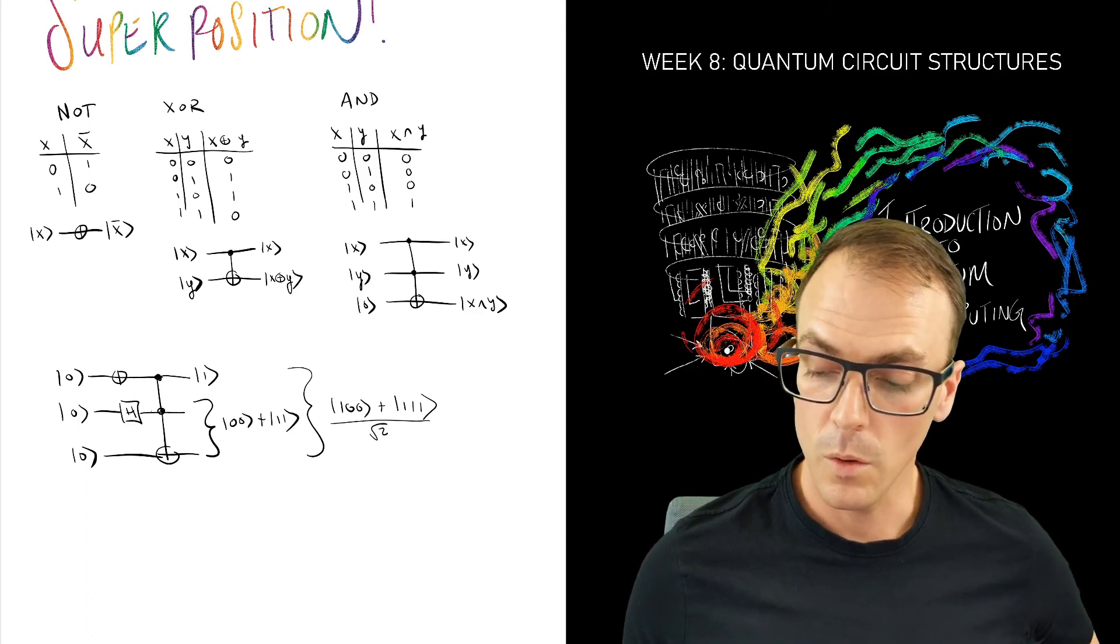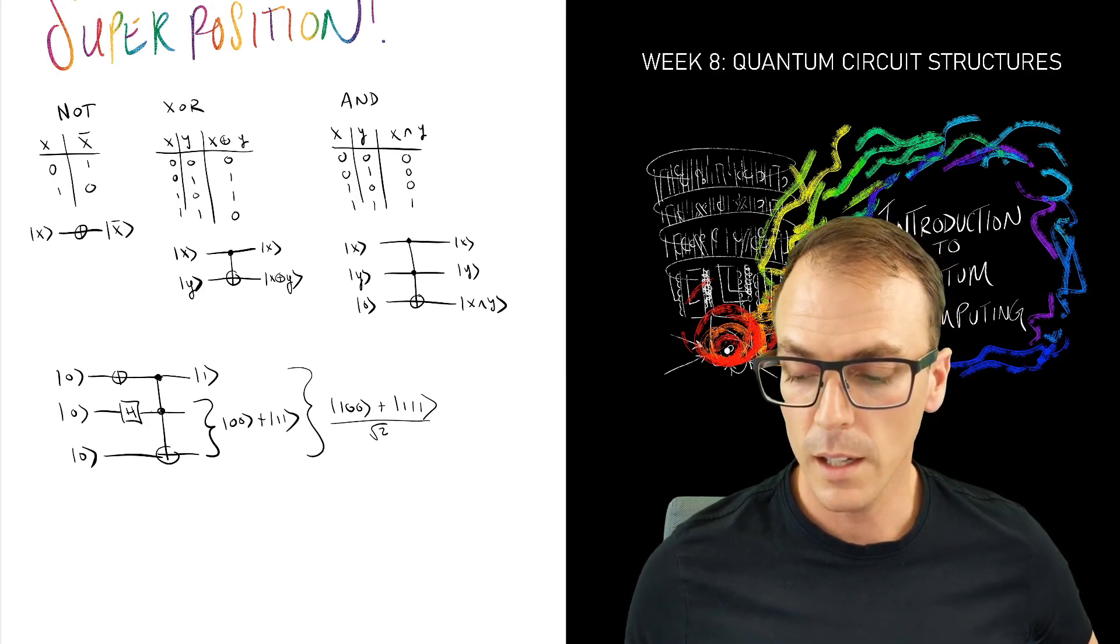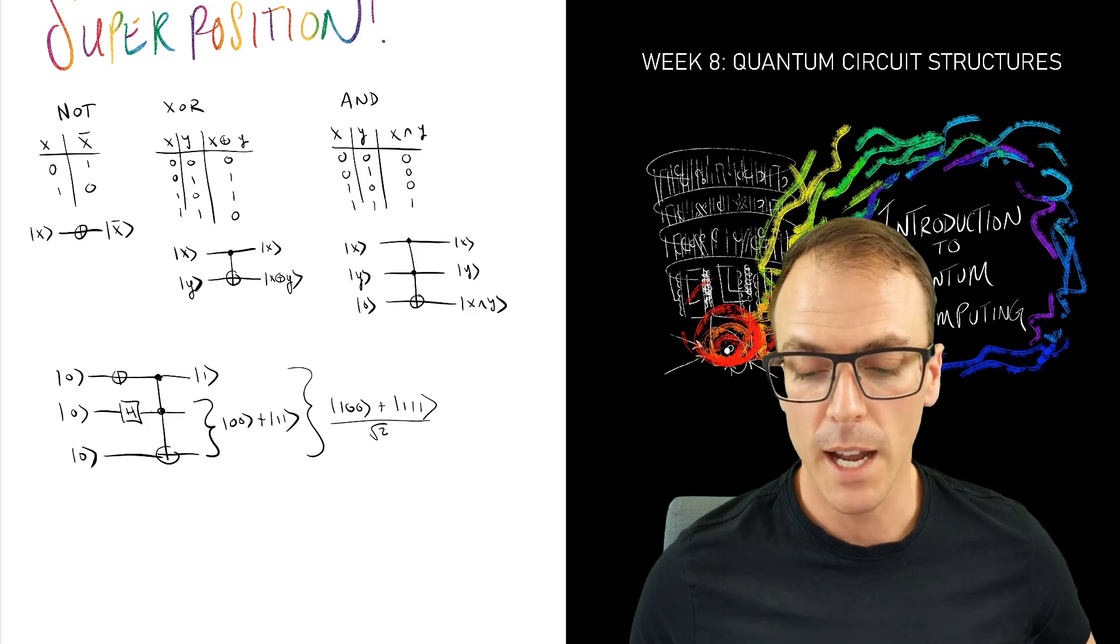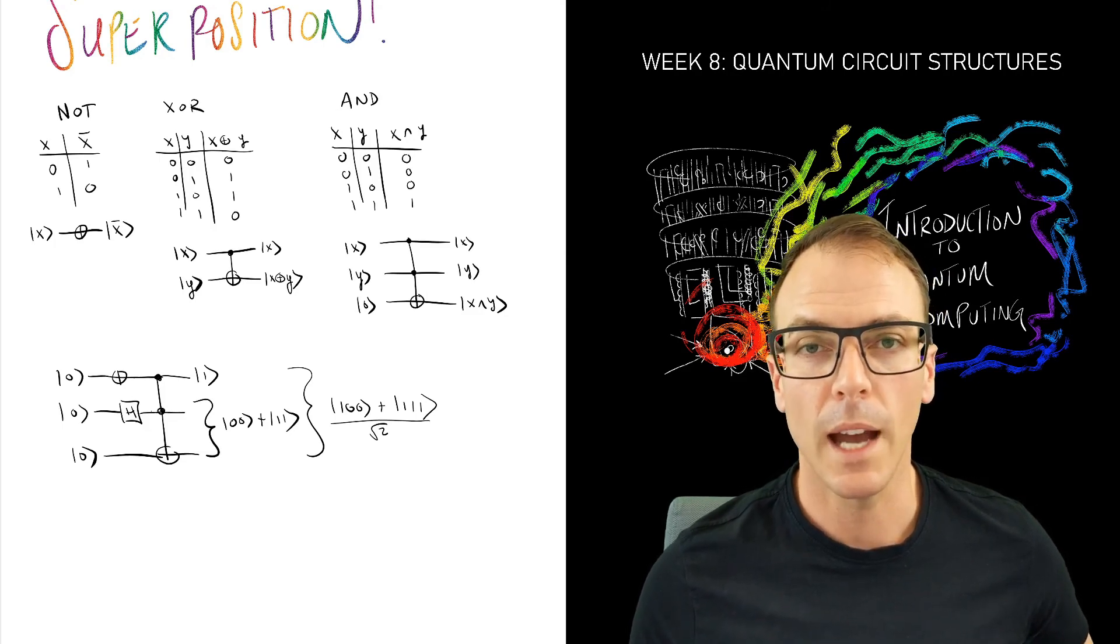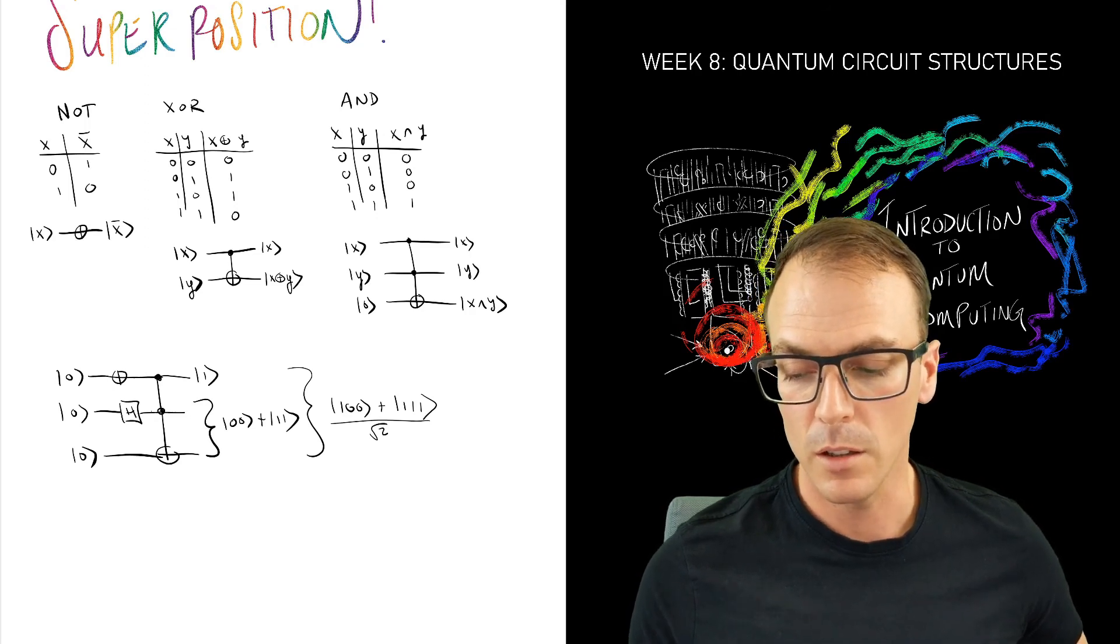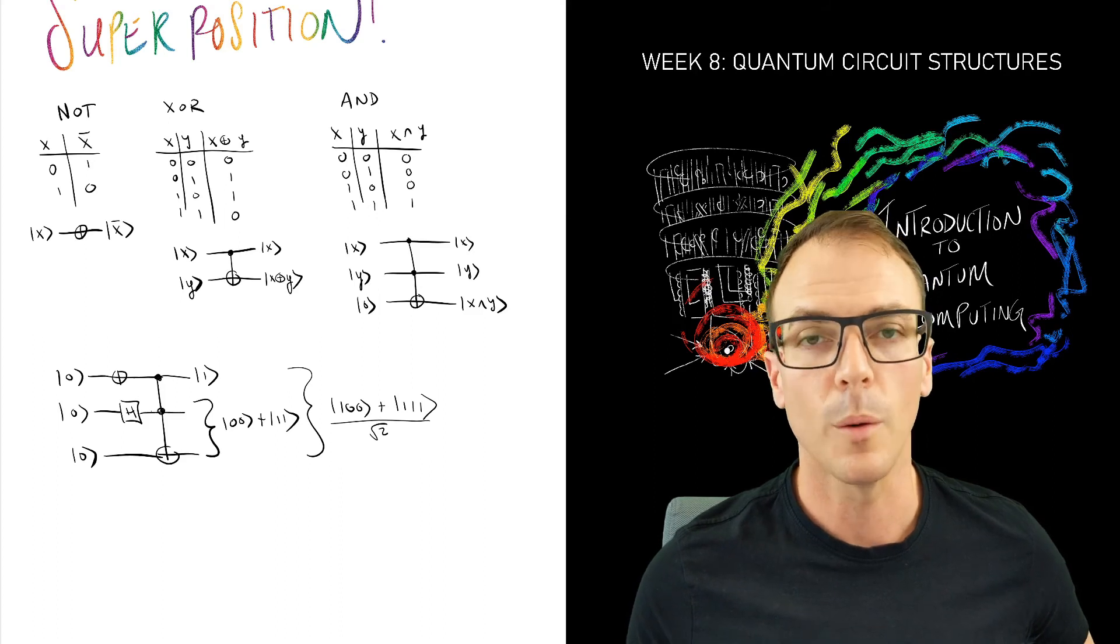So these logic gates work in superposition and we create this sort of entanglement in which we have a linear combination of the classical logic computation performed in parallel.